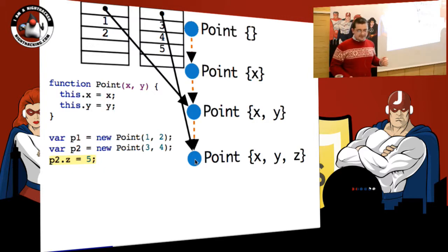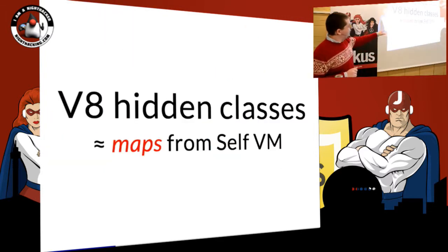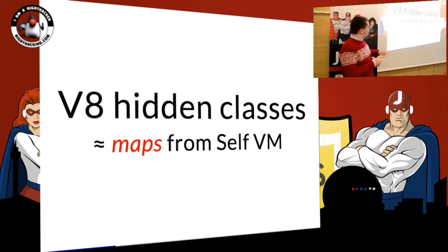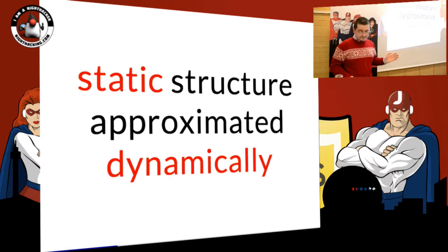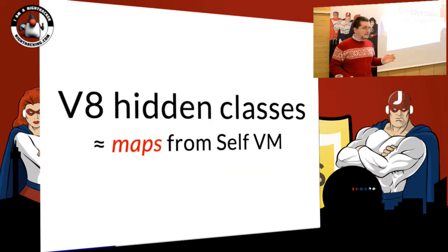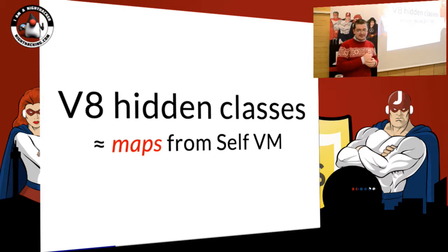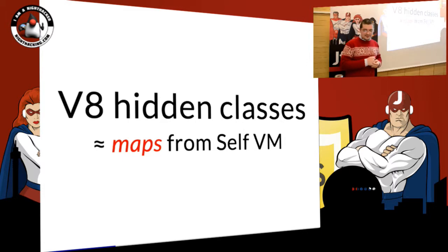Of course, if you add another property to the second object, they will no longer share any shape — there will be another shape. But if you add property Z to the first one, it will go and share the shape again. Different VMs call these differently — JavaScriptCore calls them shapes or structures, SpiderMonkey calls them shapes, and so on. Everybody has them. Nobody talks about them.